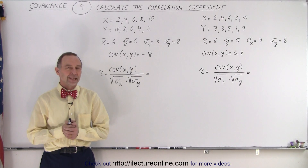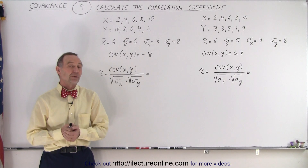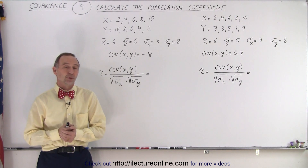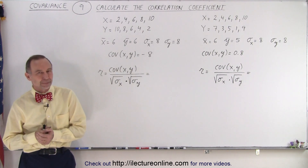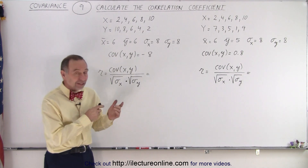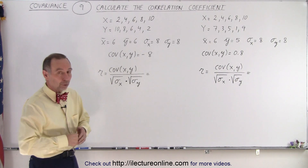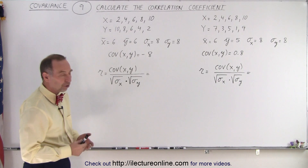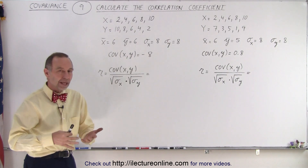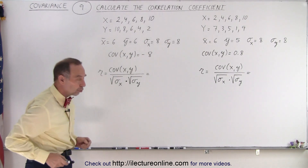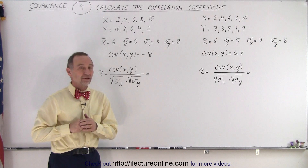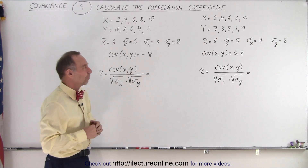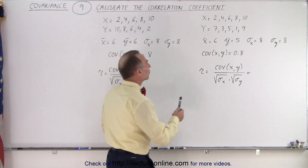Welcome to I Like to Run Line. In this video, we're going to calculate a couple of correlation coefficients for two sets of data sets. We've seen these data sets before, so we don't have to go through the trouble of finding the average, the variances, and the covariances — we're just going to write them down, calculate the two correlation coefficients, and interpret the results. Here are the two data sets.